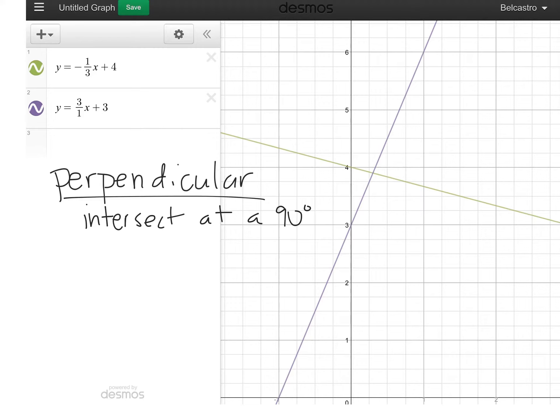So these two lines, my purple and my green line - if we were to take a protractor and measure this, they will intersect at a 90 degree angle.